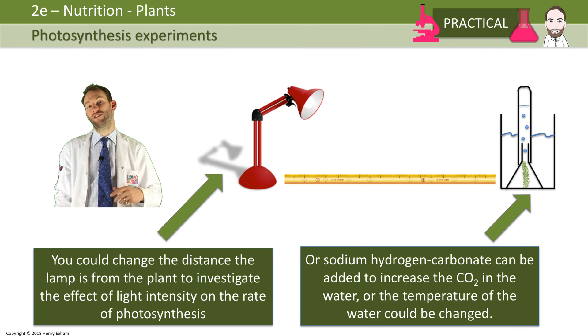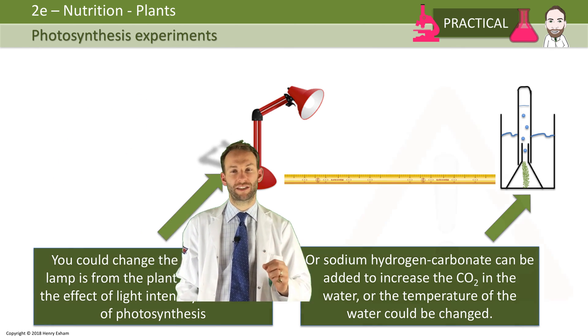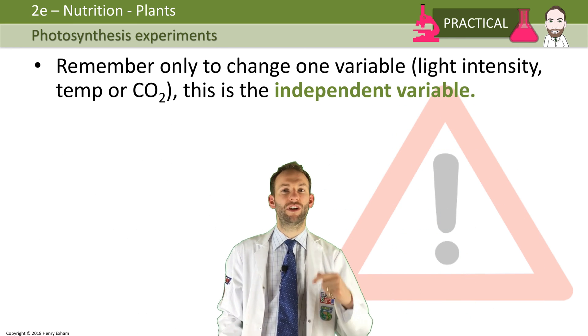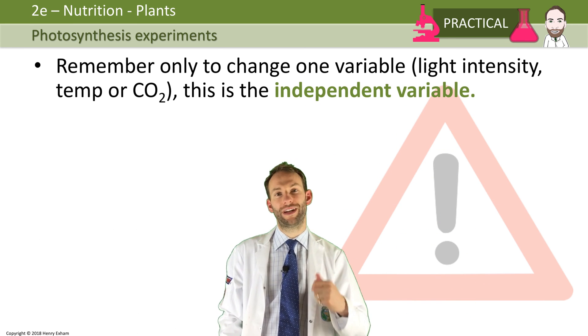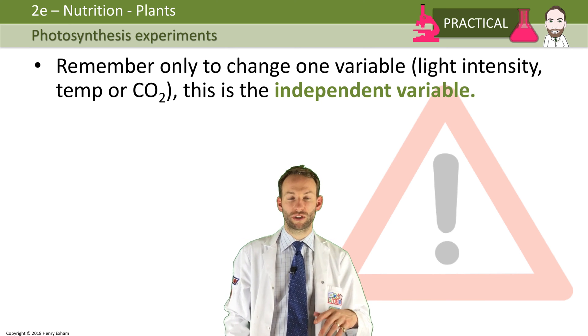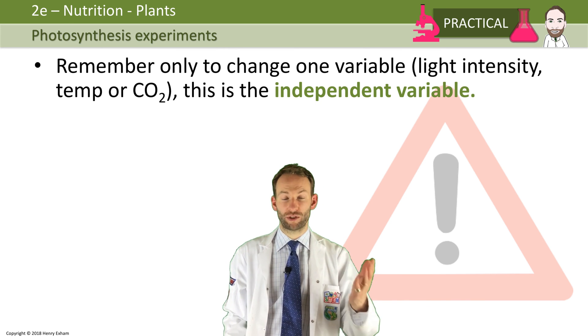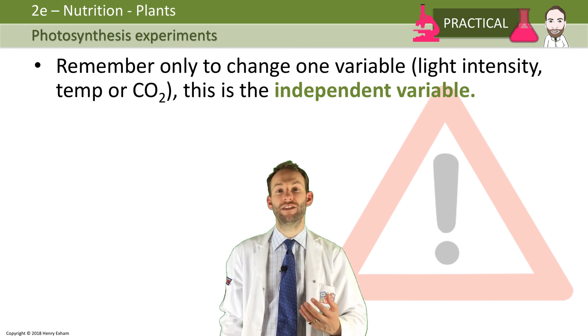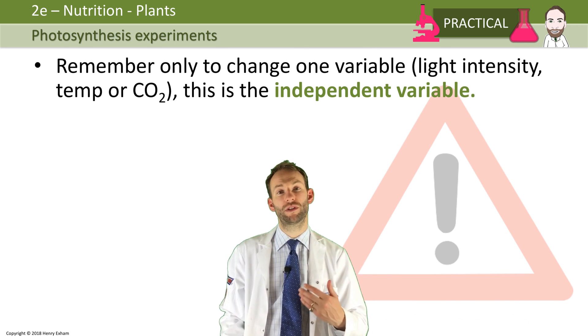Remember, only change one variable at a time - either the light, the temperature, or the CO2. That is what we call your independent variable. All the other variables in the investigation must stay controlled, and there'll be one variable which you measure, which will be your results, which is what we call the dependent variable. In this case that will be the number of bubbles per minute.